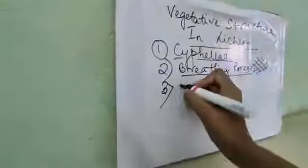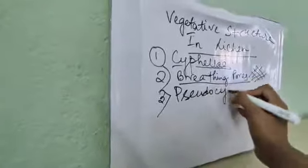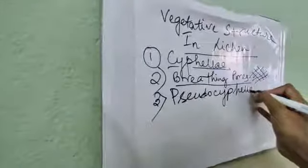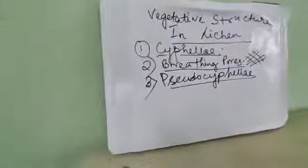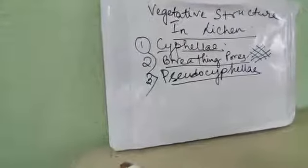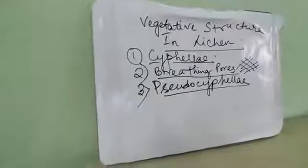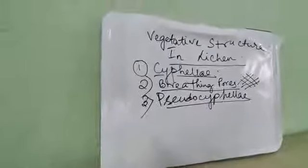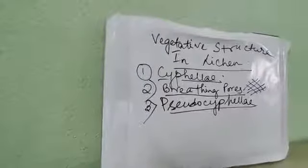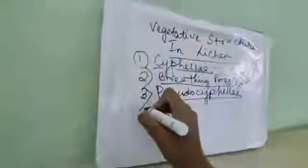Number 3 is Pseudocyphellae. 'Pseudo' means false. These are simple, smaller, less differentiated patches or cracks — irregular cracks occurring on the lower cortical region with some medullary tissues.